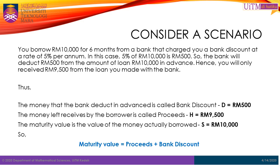Consider a scenario where you borrow RM10,000 for 6 months from a bank that charges you a bank discount at a rate of 5% per annum. In this case, 5% of RM10,000 is RM500. So the bank will deduct RM500 from the loan amount of RM10,000 in advance. Hence, you will only receive RM9,500 from the loan you made with the bank.